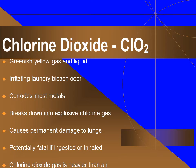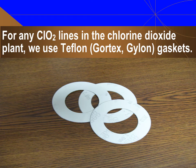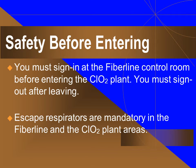Chlorine dioxide gas is heavier than air, so it sinks to low elevations. For any CLO2 lines in the chlorine dioxide plant, we use Teflon Gore-Tex Gylon gaskets. For your safety, before entering the chlorine dioxide plant, you must sign in at the fiberline control. You must also sign out after leaving. Escape respirators are mandatory in the fiberline and chlorine dioxide plant areas.